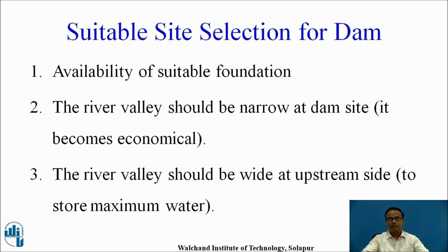Now, what are the parameters required for suitable site selection for dam or reservoir? The first parameter is availability of a suitable foundation. The foundation is a very important parameter while constructing any kind of structure, as we are going to construct a dam for a lifespan of 50 to 75 years, so the foundation should be strong. The second parameter is the river valley should be narrow at the dam side, i.e., on the downstream side, because the length of dam required will be less, making it economical.